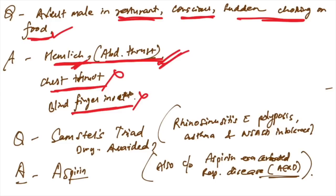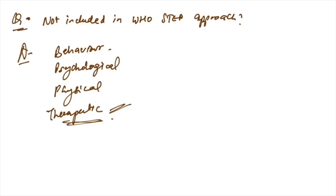Samter triad was given: rhinosinusitis with polyposis, asthma with NSAID intolerance. Which drug is needed to be avoided? Aspirin is avoided in Samter triad because it is also known as aspirin exacerbated respiratory disease, AERD. This is very important. Which of the following is not included in WHO step approach? Behavior, psychological, physical were included, but therapeutics are not included in WHO step approach.